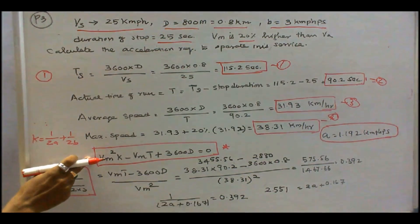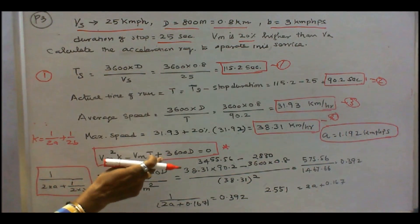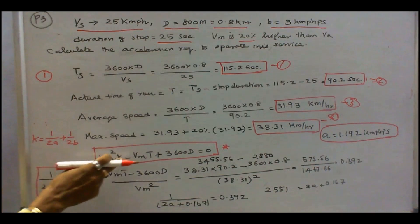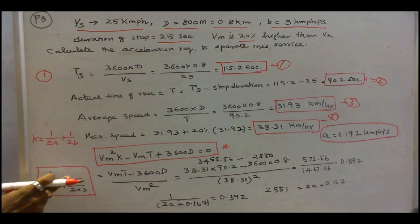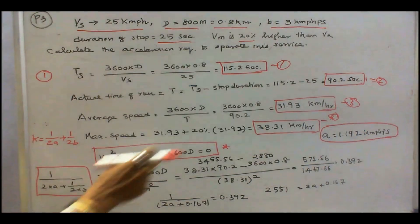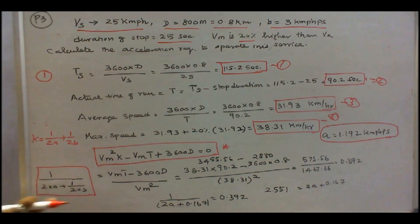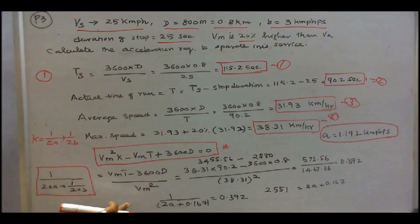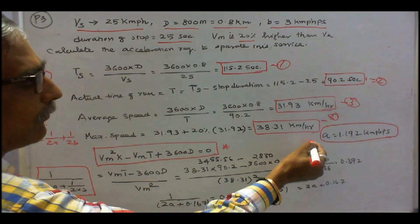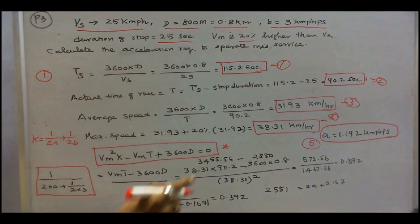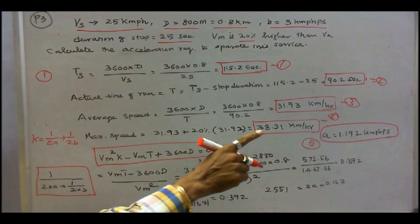Using vm squared times k minus vm times T plus 3600 times d equals zero, where k equals 1 over 2a plus 1 over 2b, and b equals 3. We solve: 1 over 2a plus 1 over 6 equals (vm times T minus 3600d) divided by vm squared. Substituting all known values, we find acceleration a equals 1.192 km per hour per second, which is the acceleration required to operate the service.